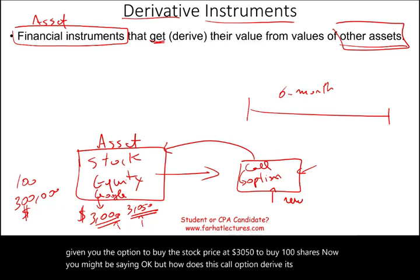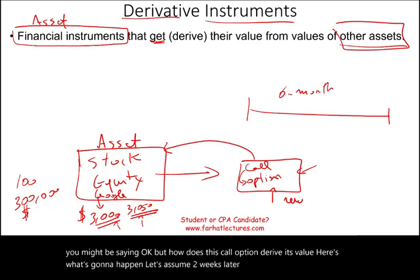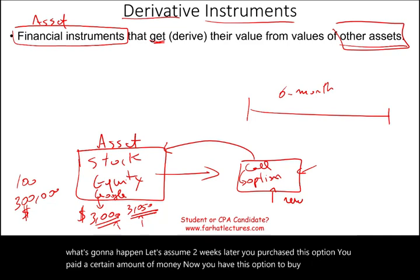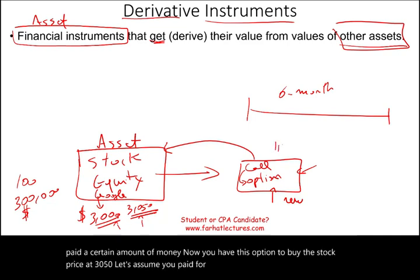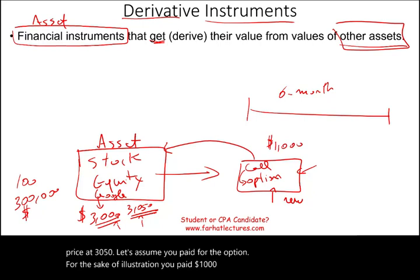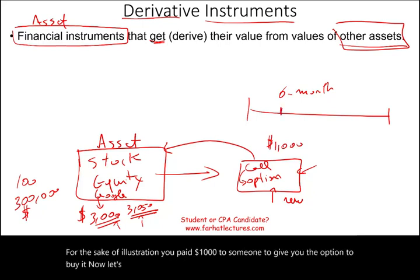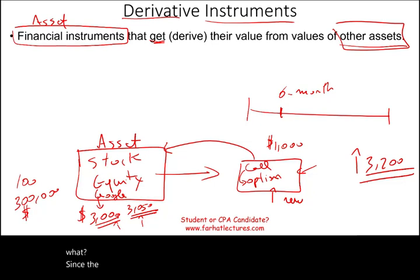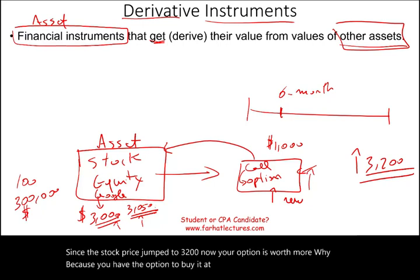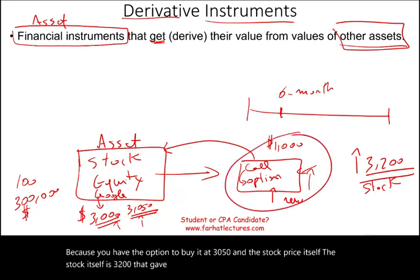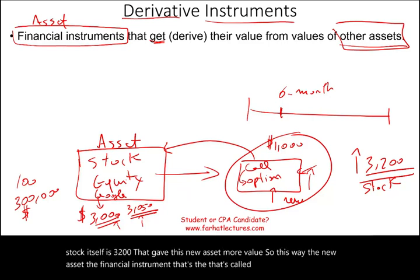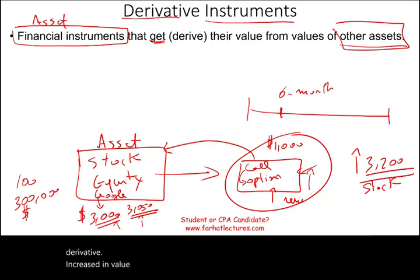Here's how the call option derives its value. You purchase the option and pay, say, $1,000 to someone to give you the right to buy the stock at $3,050. Two weeks later, Google's stock jumps to $3,200. Now your option is worth more — because you have the right to buy at $3,050 while the stock itself is trading at $3,200. That increase in the stock price gave the derivative more value.